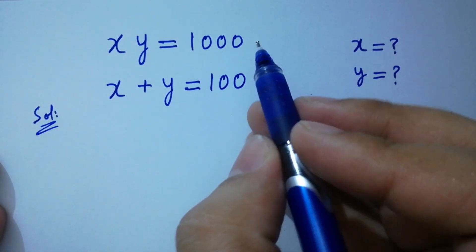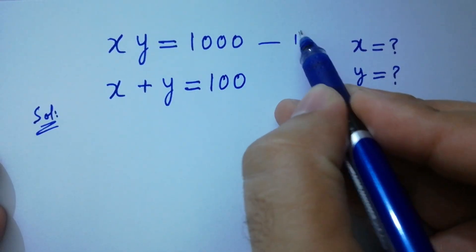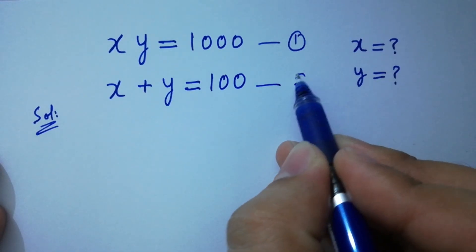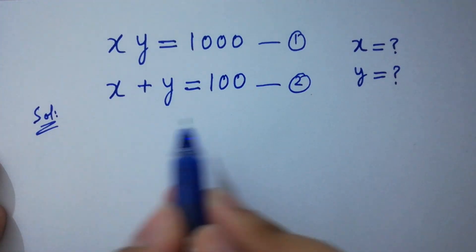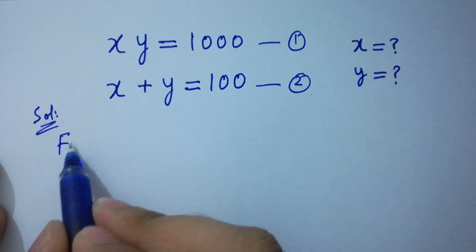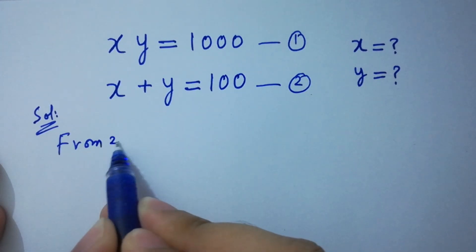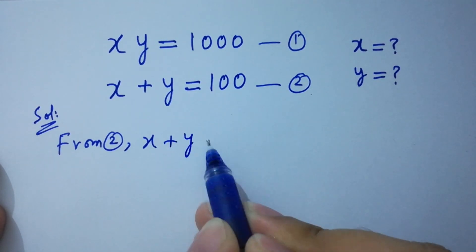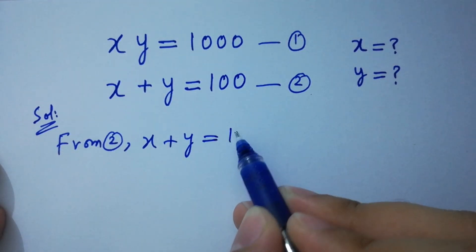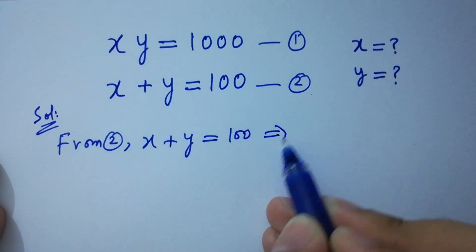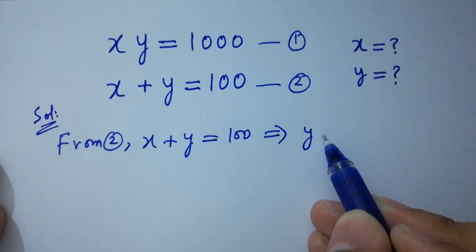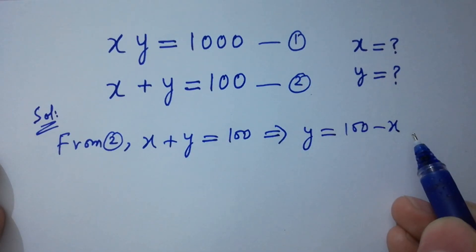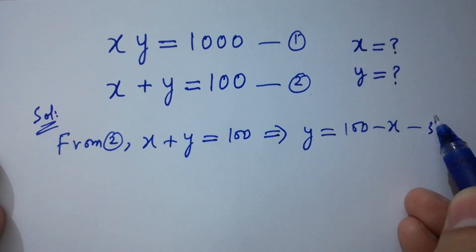Let xy equal to 1000 be the first equation and x plus y equal to 100 be the second equation. From the second equation, x plus y equals 100, so y equals 100 minus x. Let this be the third equation.